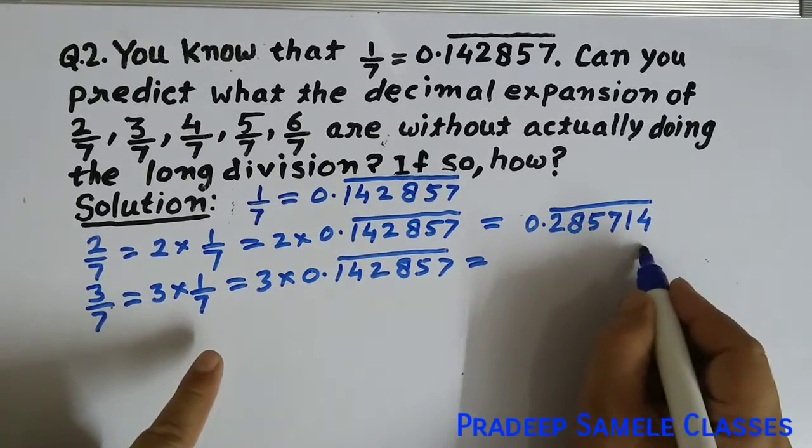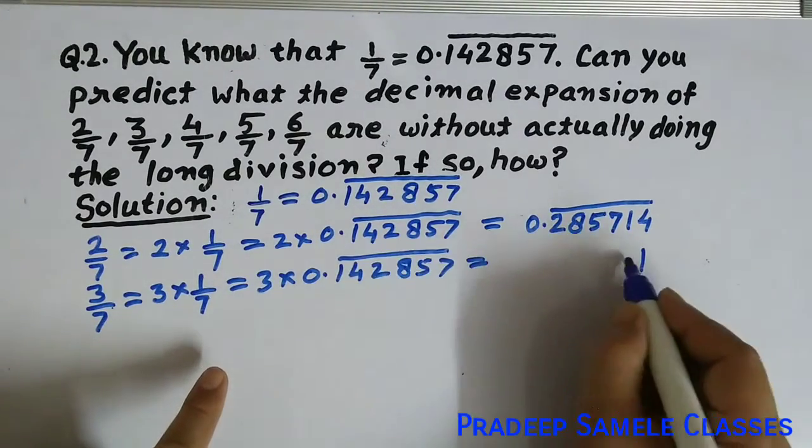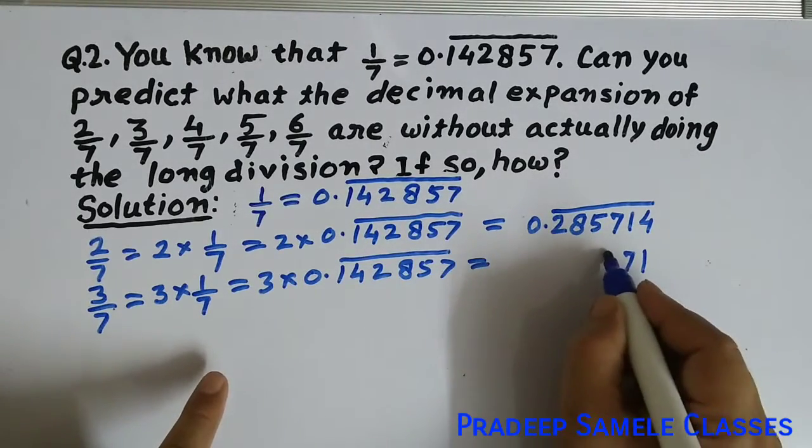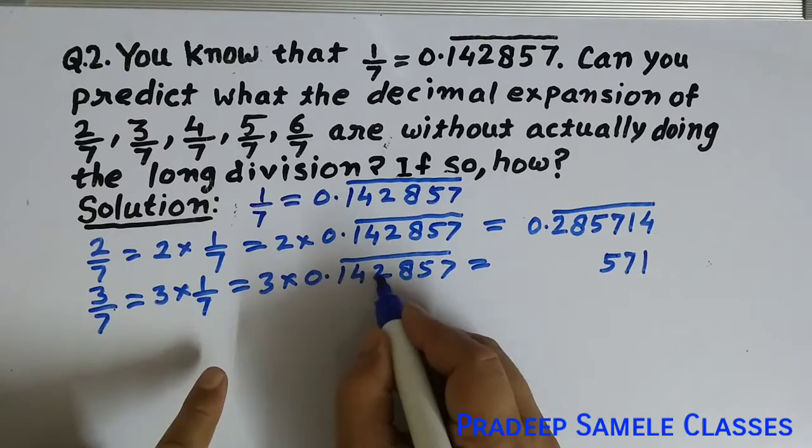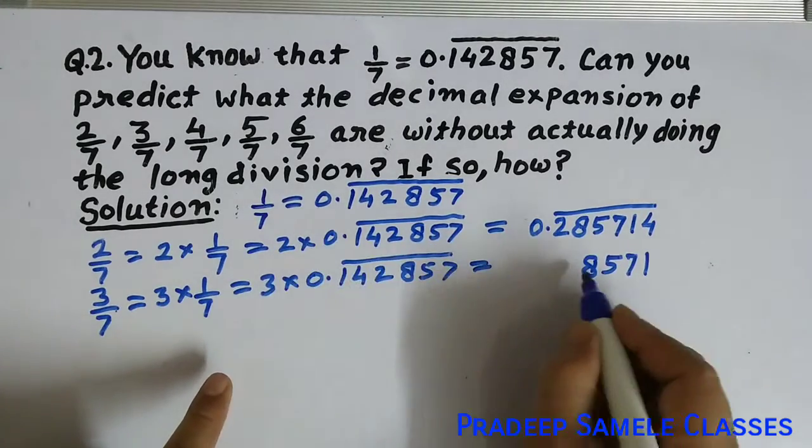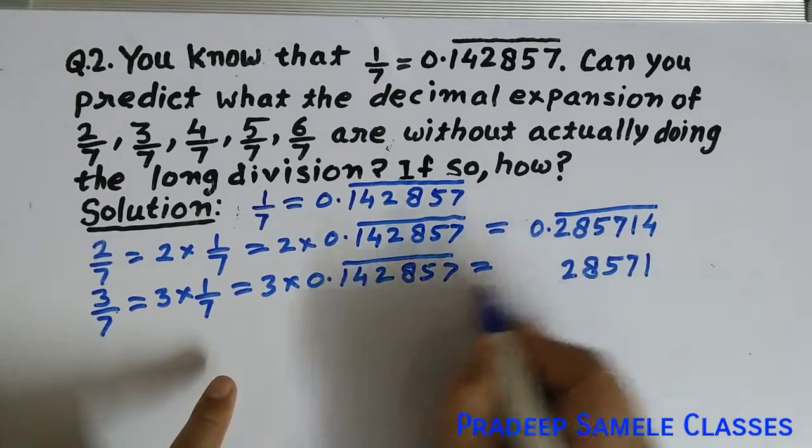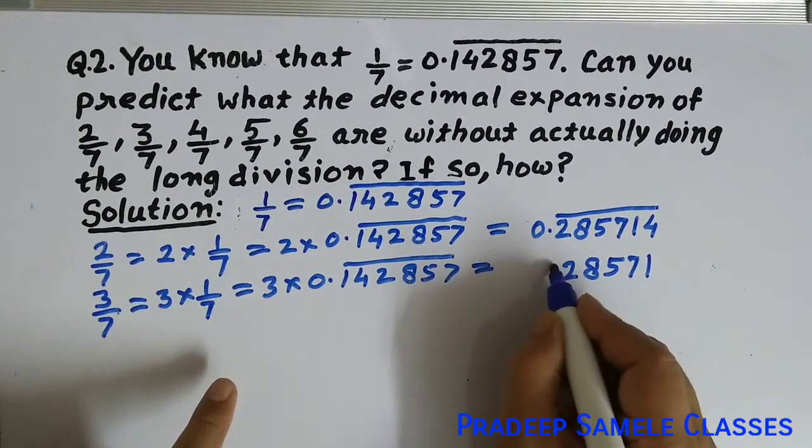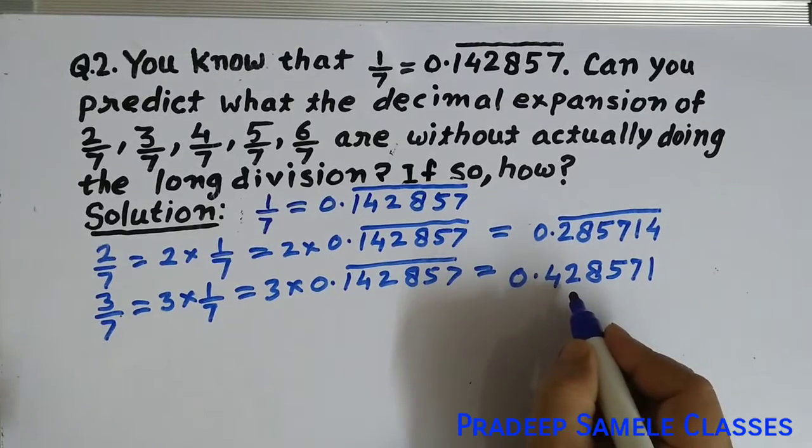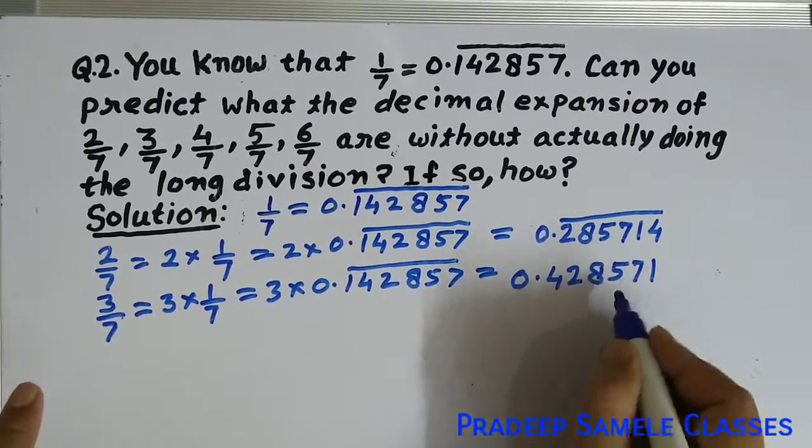When we multiply, 3 times 7 is 21, so we get 1. 3 times 5 is 15, plus the carry gives 17. 3 times 8 is 24 plus 1 is 25. 3 times 2 is 6. 3 times 4 is 12, carry 1. 3 times 1 is 3 plus 1 is 4. So we get 0.428571 bar.